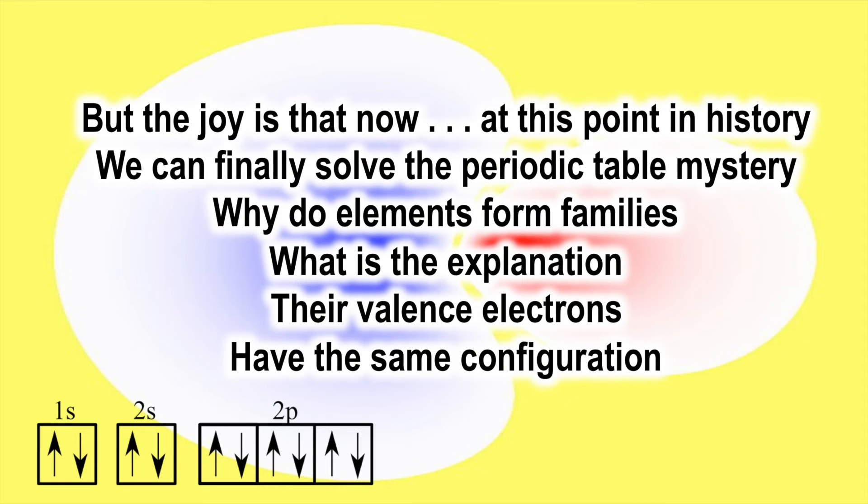But the joy is that now, at this point in history, we can finally solve the periodic table mystery. Why do elements form families? What is the explanation? Their valence electrons have the same configuration.